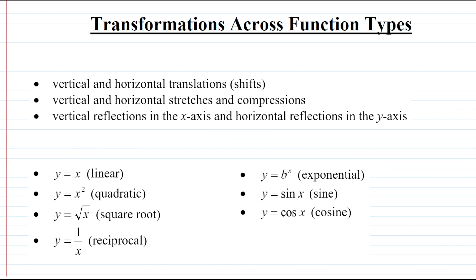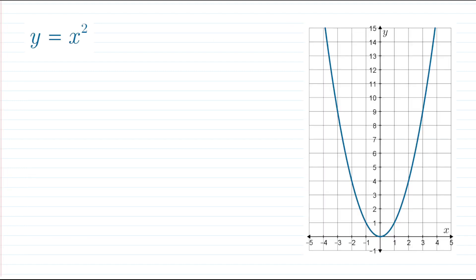The second list is all the base or parent functions that you would have applied transformations to: y = x (a straight line), y = x² (our parabola), the square root function y = √x, the reciprocal function y = 1/x, y = bˣ for exponential functions where the base b could be two, three, or one-half, and our trigonometric functions y = sin x and y = cos x. Let's do some examples to refresh our memory on how transformations work.